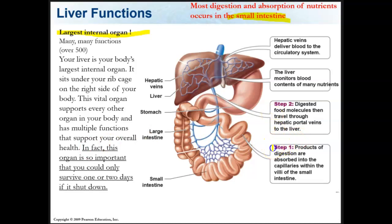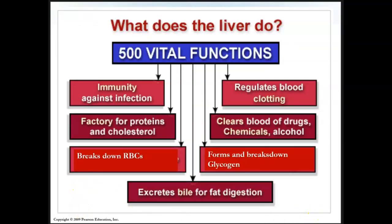When we talk about digestion and absorption, the products of digestion are absorbed into the capillaries in the villi of the small intestine. These digested food molecules then travel through the hepatic portal veins into the liver — all absorbed food ends up going into the liver. The liver monitors blood contents of many nutrients and delivers blood to the circulatory system. The liver is a detoxifier, filtering toxins like drugs, chemicals, and alcohol from the blood. It also breaks down worn-out red blood cells and recycles them, and it forms and breaks down glycogen — the storage form of glucose — releasing glucose into the bloodstream as needed.